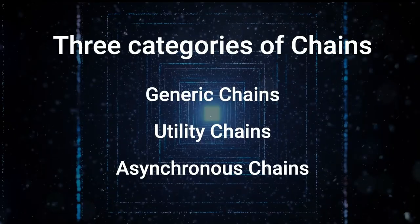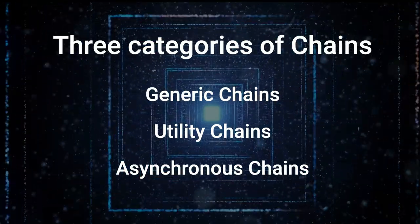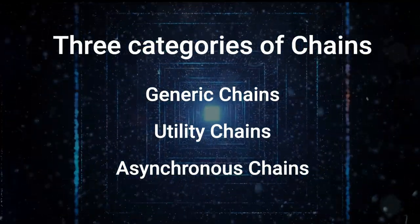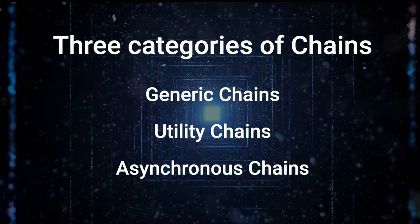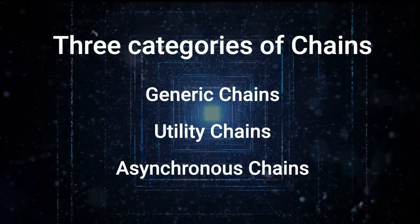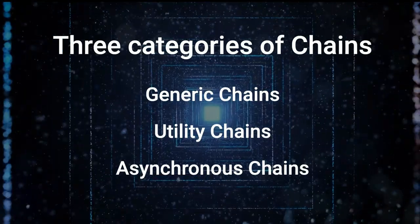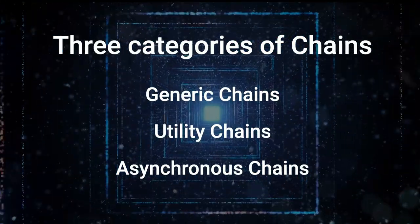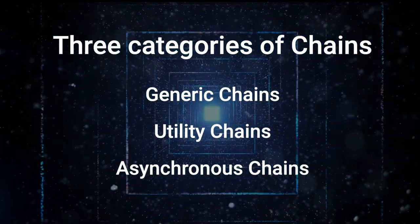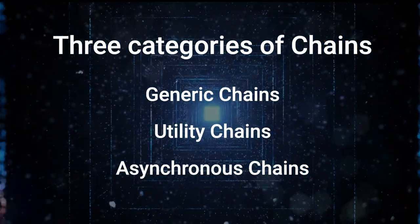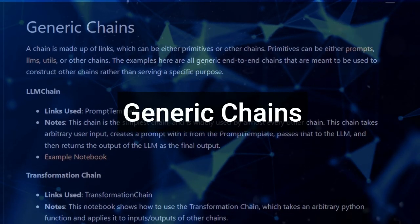There are three categories of chains currently. We have generic chains, which are basically used for building other chains; utility chains, where a lot of the utilities and tools actually live; and then asynchronous chains for doing async functions and tasks.